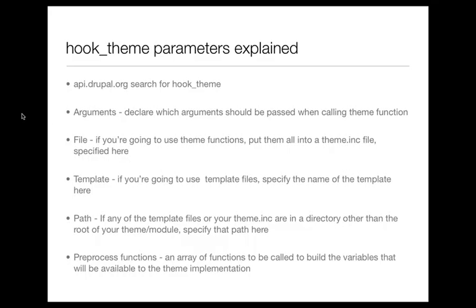Another thing you can add is the template. If you're going to use an actual template file as opposed to a theming function, you would specify the name of the template file here. I'll get into the difference between theming functions and template files in a bit. In the hook_theme, you provide a template if it is a template file implementation, and file if it's a theming function. Also, it's good practice to put any template files in their own directory within your theme, and if you do that, you need to specify that in the path. You can also set the preprocess functions, which is really beneficial if you want to have some extra preprocess functions.